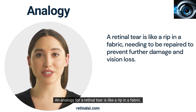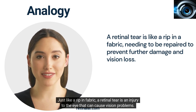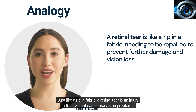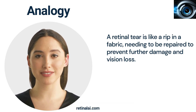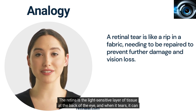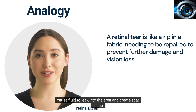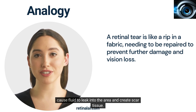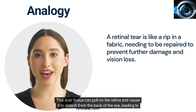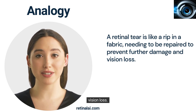An analogy for a retinal tear is like a rip in a fabric. Just like a rip in fabric, a retinal tear is an injury to the eye that can cause vision problems. The retina is the light-sensitive layer of tissue at the back of the eye, and when it tears, it can cause fluid to leak into the area and create scar tissue. This scar tissue can pull on the retina and cause it to detach from the back of the eye, leading to vision loss.